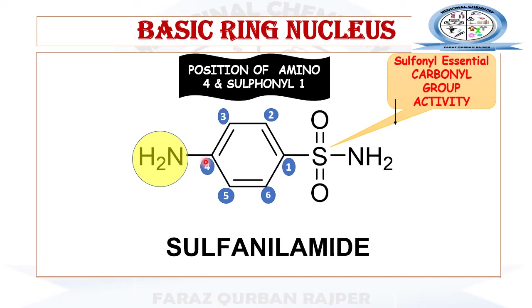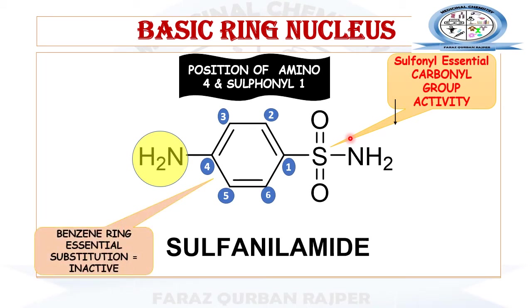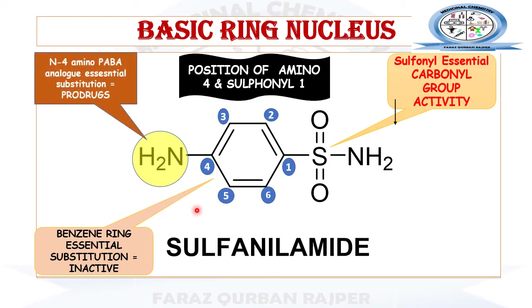If we substitute the position-one sulfonyl group with a carbonyl group, it will result in decreased activity. If we substitute the benzene ring with any other functional group or ring, the derivative will have no activity — it will be inactive. The fourth-position amino group, however, can be substituted with other functional groups to produce active derivatives of the sulfonamide class.